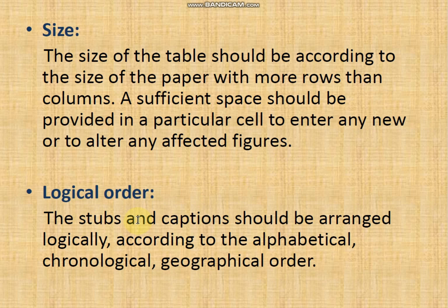Next, logical order: the stubs and captions should be arranged logically according to alphabetical, chronological, or geographical order. For example, in a table of states and their paddy production, one column should have the names of the states and another column the production in tons, arranged in ascending, descending, or geographical order. The order of rows and columns should follow a logical pattern.